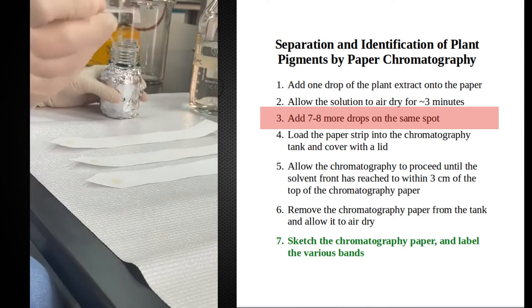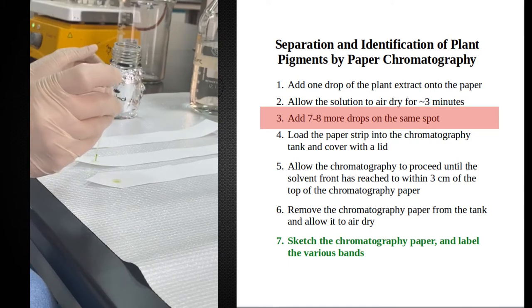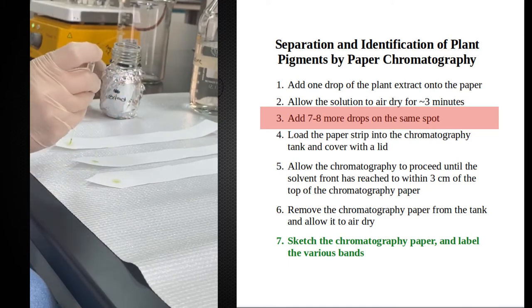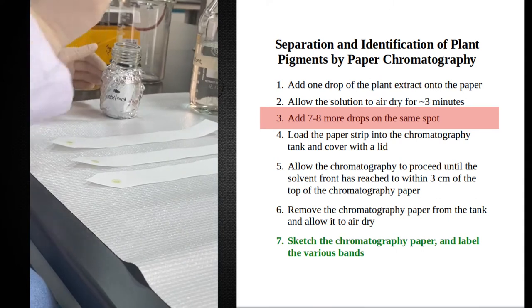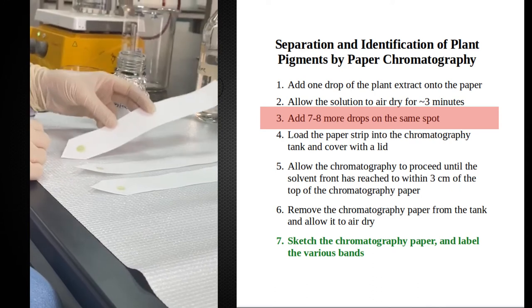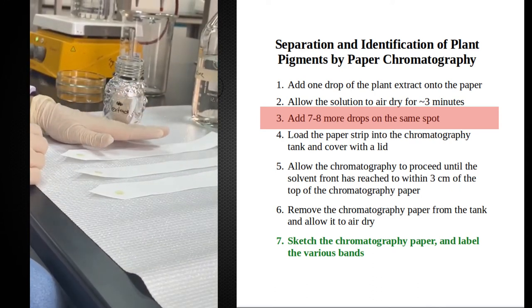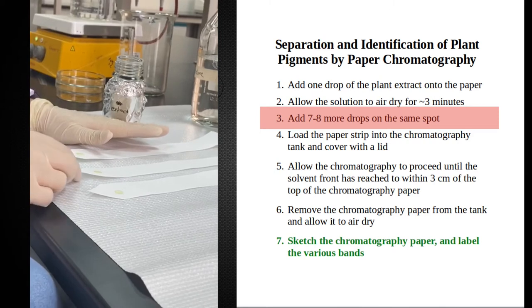We are waiting for the spots to dry and then we are adding more of the chlorophyll extract. This is spot number four. I'm waiting for three minutes between one spot and another until it dries. We will add up to seven spots and then transfer the papers to the chromatography chamber.